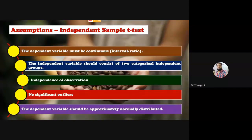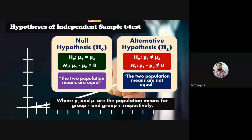The samples must be independent of each other — observations do not depend on one another. There should be no significant outliers, and the dependent variable should be approximately normally distributed. These are the conditions the data must satisfy before adopting the independent sample t-test. For the hypothesis: H₀ states that mu₁ equals mu₂ — the two population means are equal. We write hypotheses in terms of populations because even though we calculate from samples, the findings are generalized to the population — that is inferential statistics.